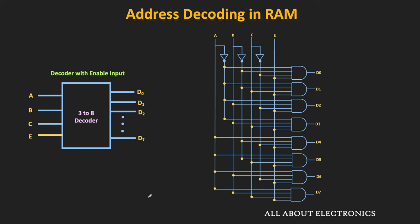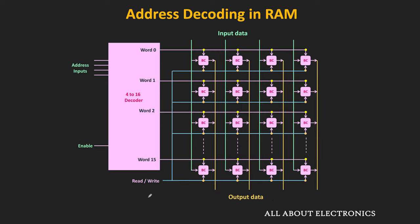In general, a k-input decoder requires 2 to the power k AND gates, and each AND gate requires 2 to the power k inputs. As the number of words in the memory increases, the required decoder size also increases, and the complexity of the decoding logic increases accordingly.